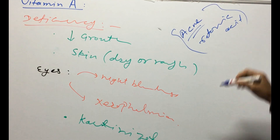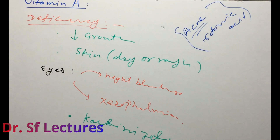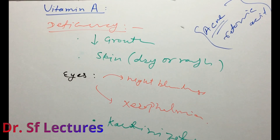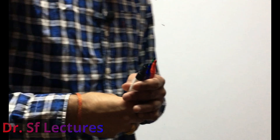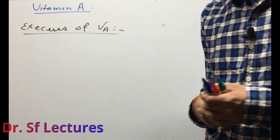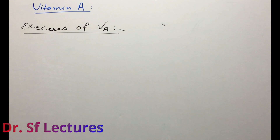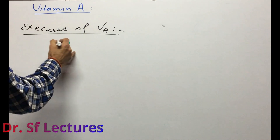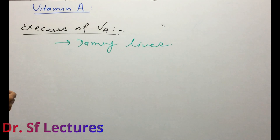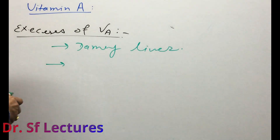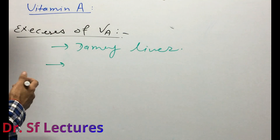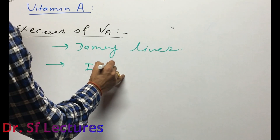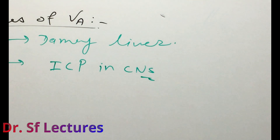Now, regarding excess of vitamin A: when someone takes a lot of vitamin A, it can damage the liver. Additionally — and this is particularly important from a neurology perspective — excess vitamin A produces high intracranial pressure in the CNS. These are the effects of vitamin A excess.